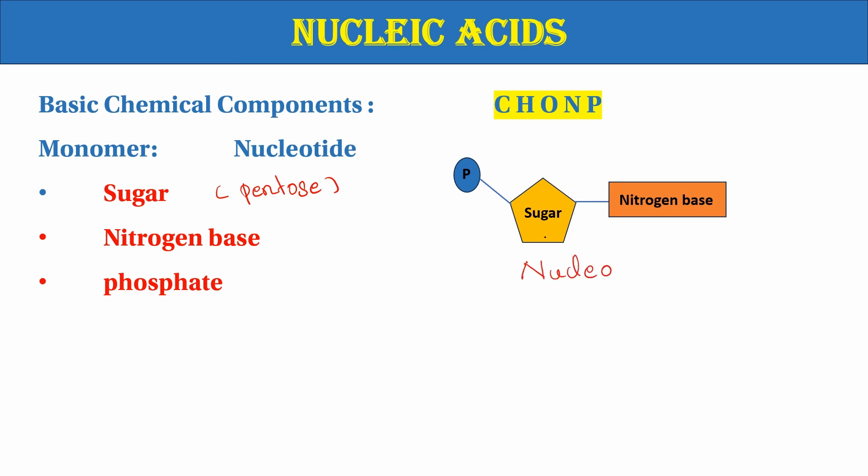Any nucleotide is the smaller monomer molecule of nucleic acid. Nucleotides are linked together to form polynucleotide chains, which are also called polynucleic acid.